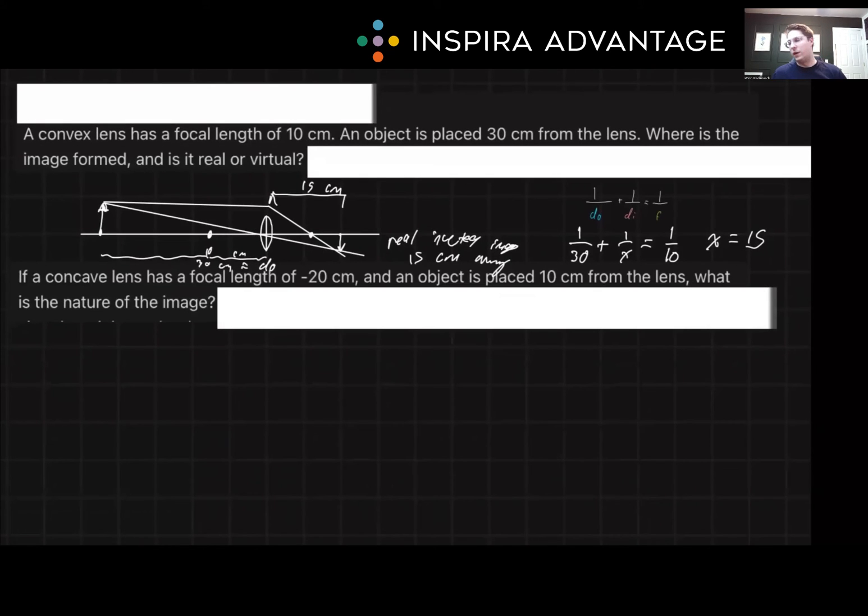Hopefully that went well for you. But if it didn't, that's all right. We've got a redemption arc. Let's do one more. Let's say a concave lens has a focal length of 20 centimeters and an object is placed 10 centimeters from the lens. What is the nature of the image? Real or virtual and what's the distance? And remember, this is a concave lens, not a convex lens.